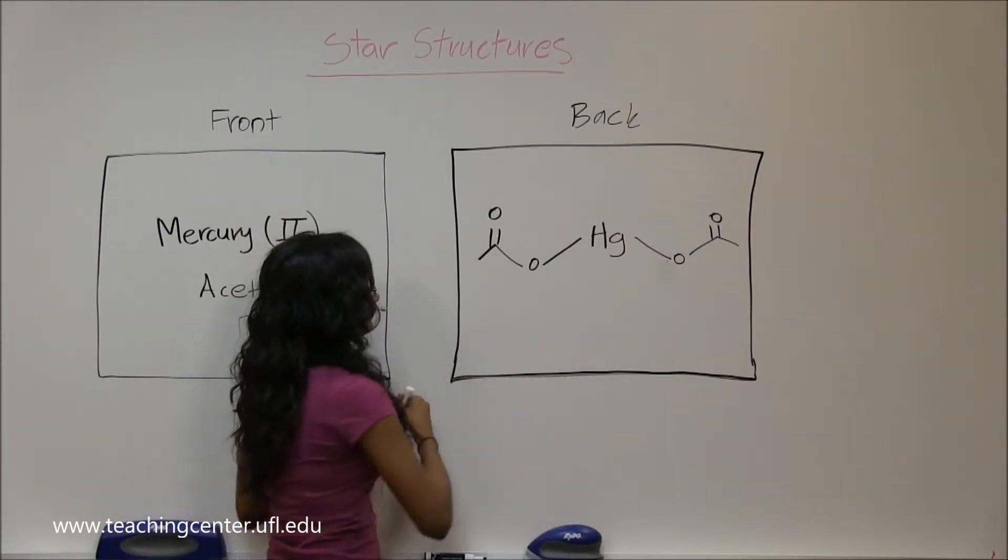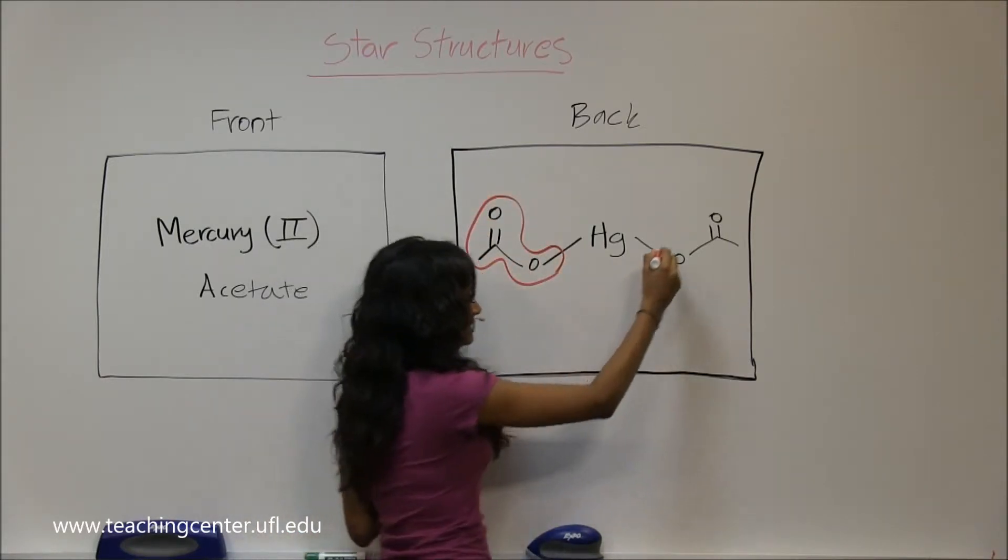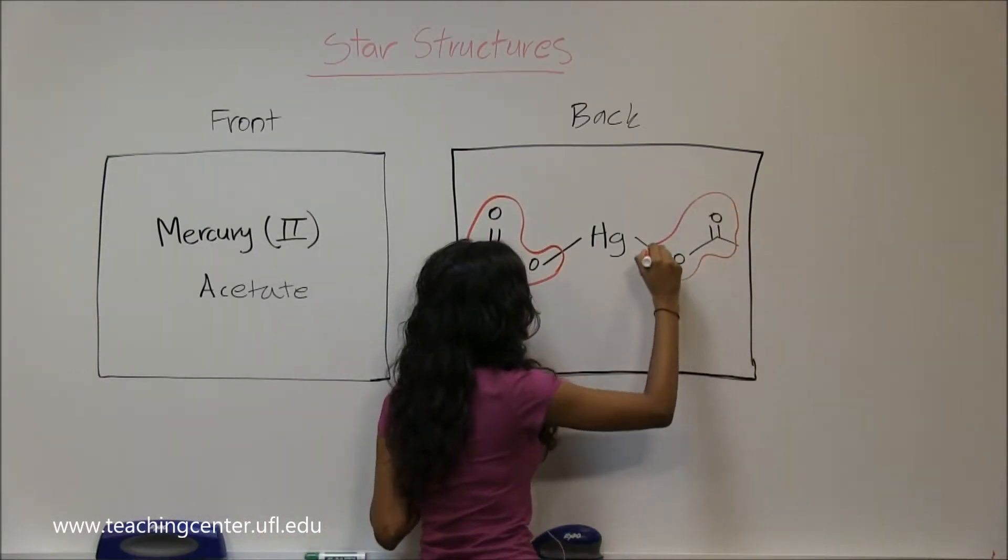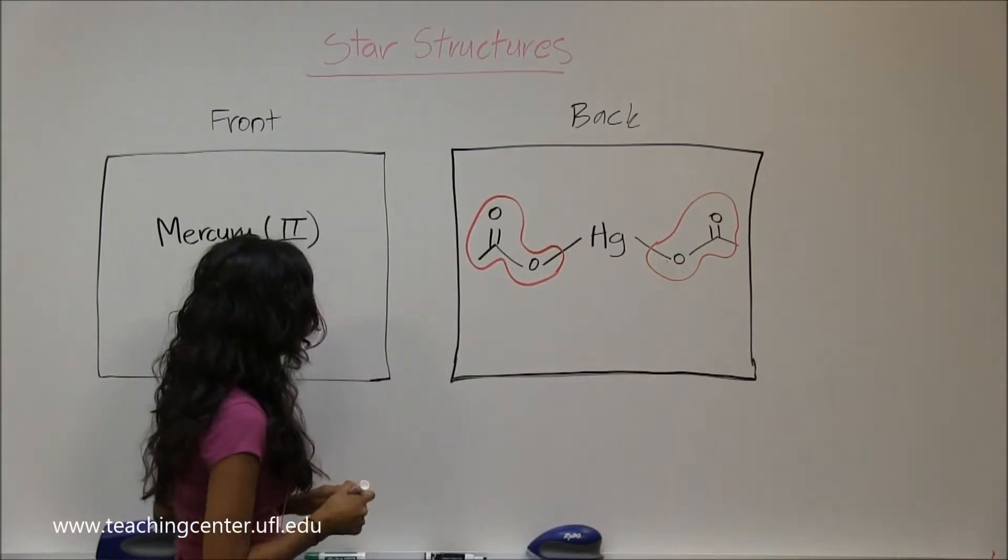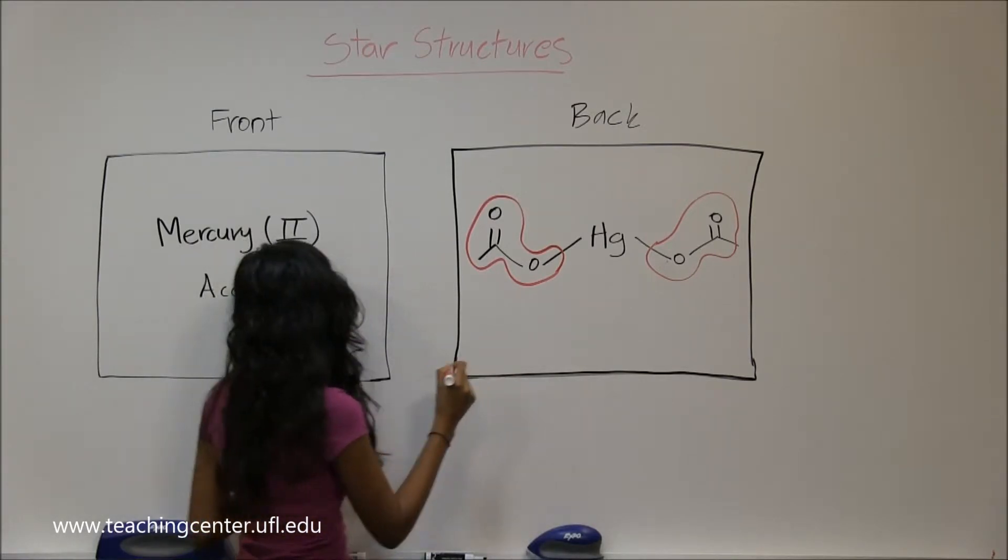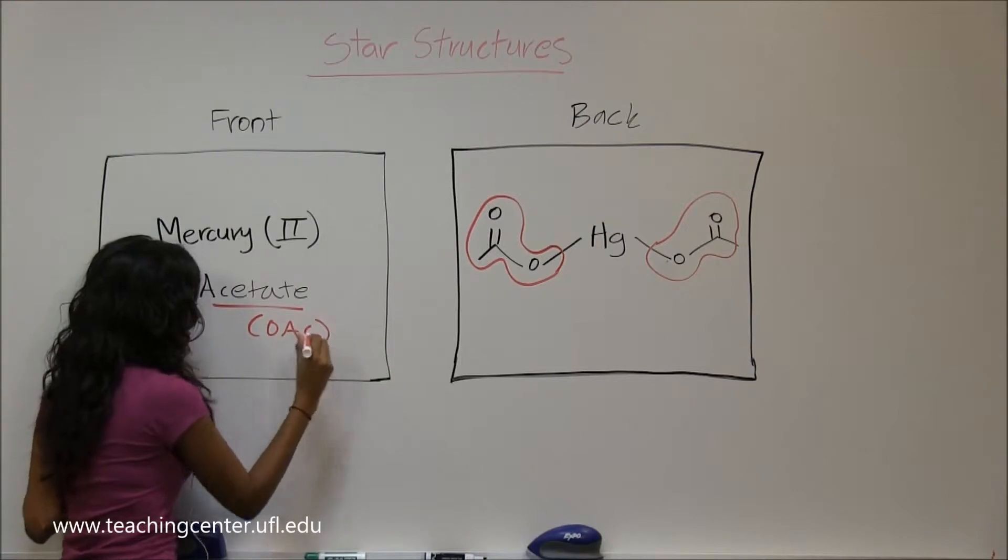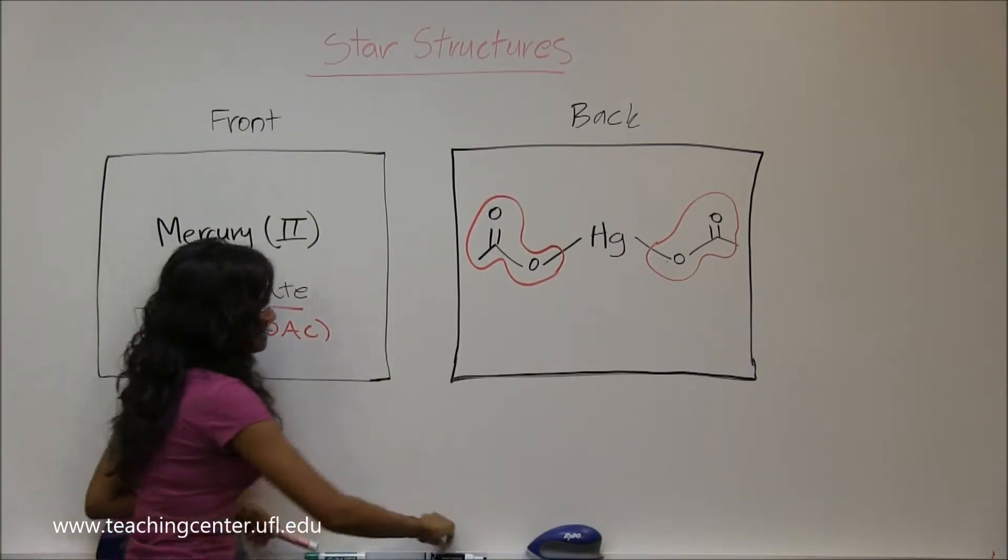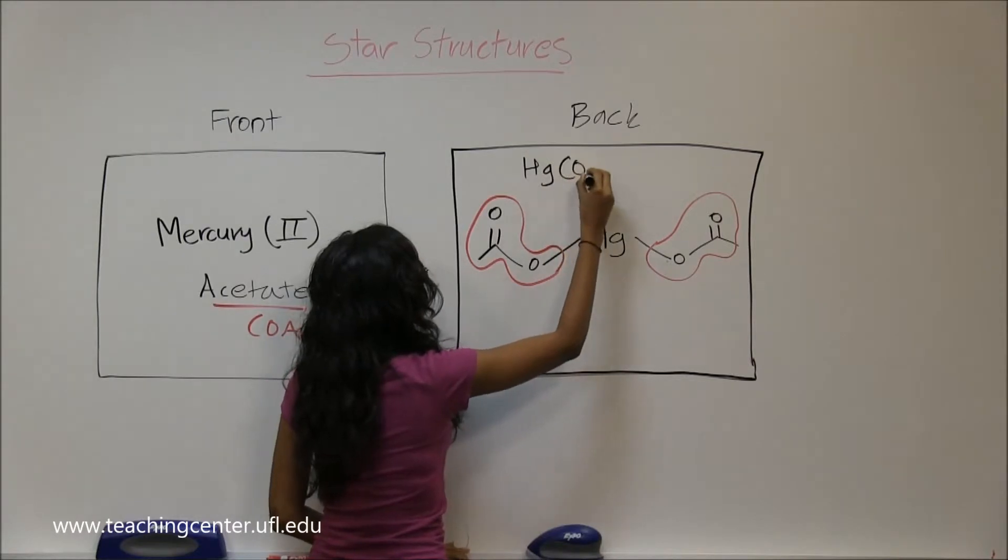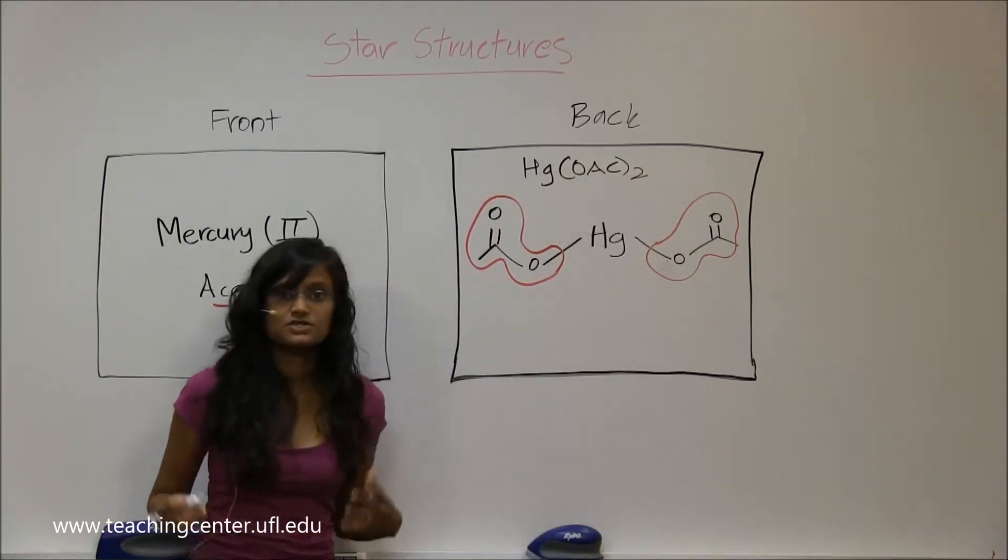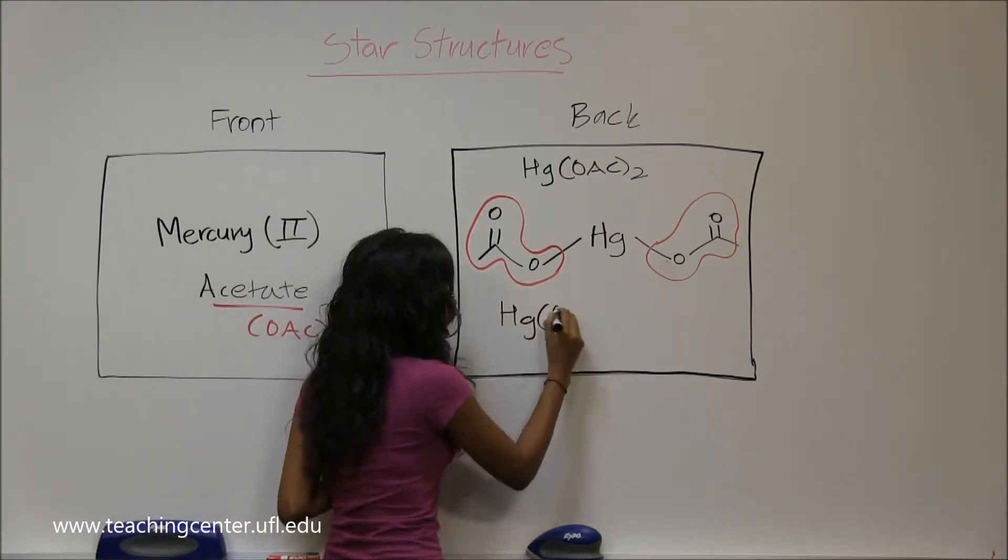So this is what we call acetate. It means it's an ester substituent. In short form you call acetate OAc, so on the exams you may see it as Hg(OAc)2. It's just a short form if you don't want to write the whole thing.